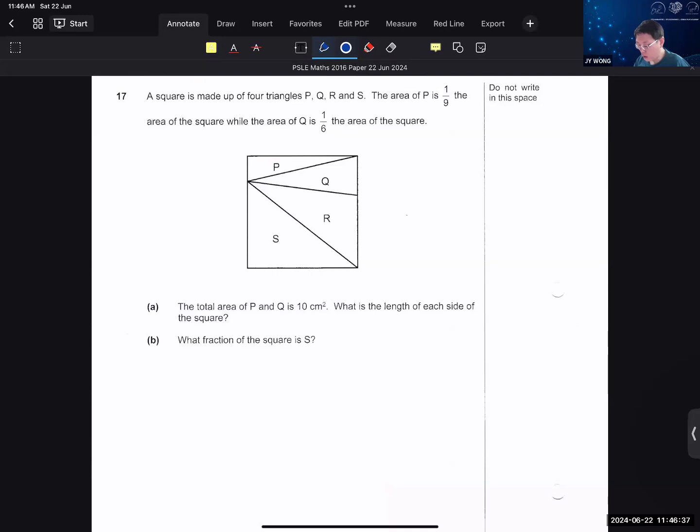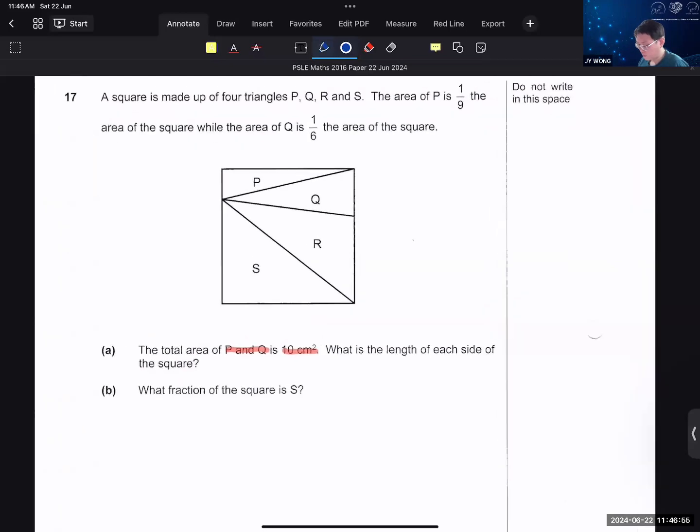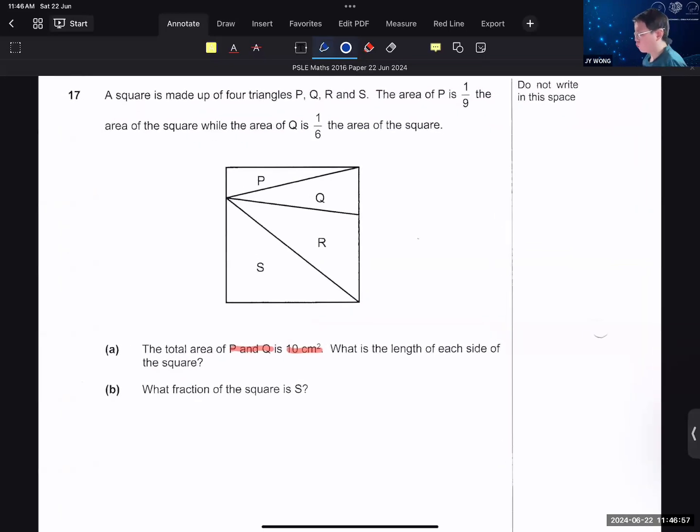Now let's look at 17A first. The total area of part P and part Q is that, what is the length of each side of the square? So you need to find, obviously, the total area. Then you square root it, that will give you the area of the square. They tell you that area P is 1/9 of the square. They tell you that area Q is 1/6 of the square.